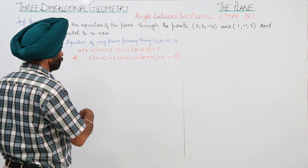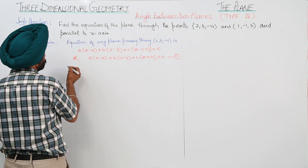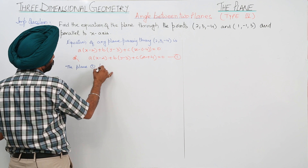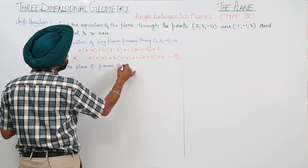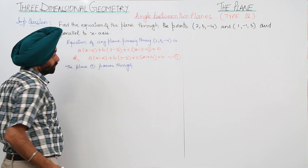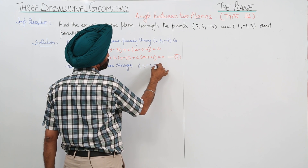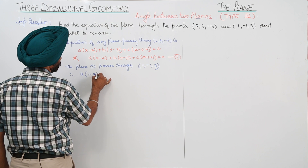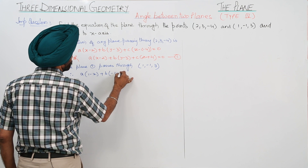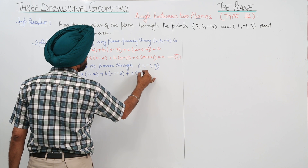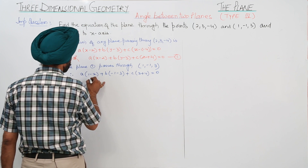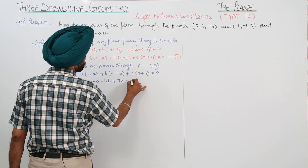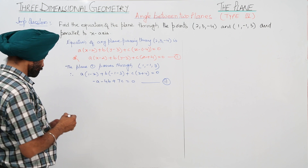The plane also passes through the second point (1, -1, 3). Therefore, substituting: a(1 - 2) + b(-1 - 3) + c(3 + 4) = 0, which gives -a - 4b + 7c = 0. This is Equation 2.